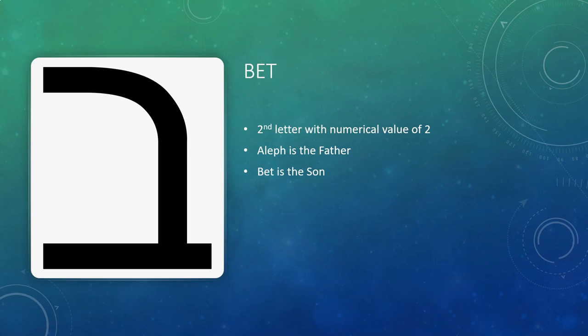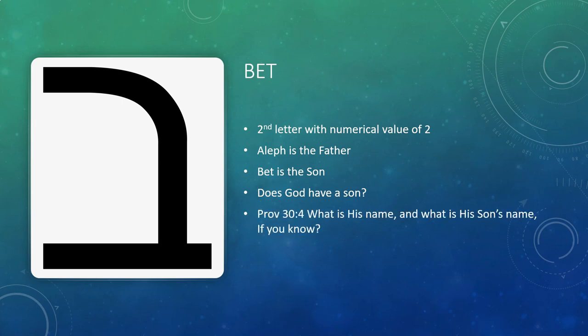Does God have a Son? Many from a Jewish background will ask this question — where does it say in the Tanakh, or what we call the Old Testament, that God has a Son? Well, one interesting verse is in Proverbs 30, verse 4, where it says, 'What is His name, and what is His Son's name, if you know?' Good question.